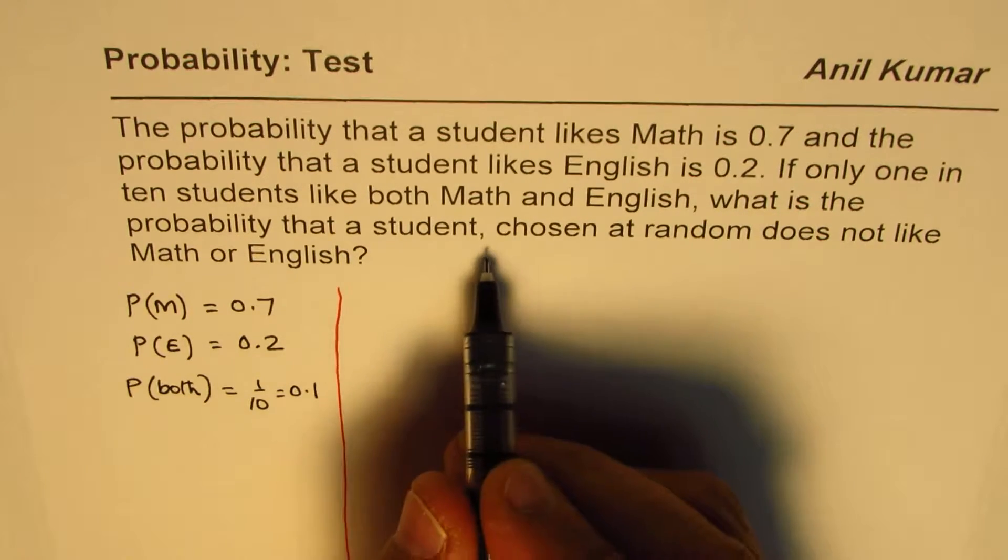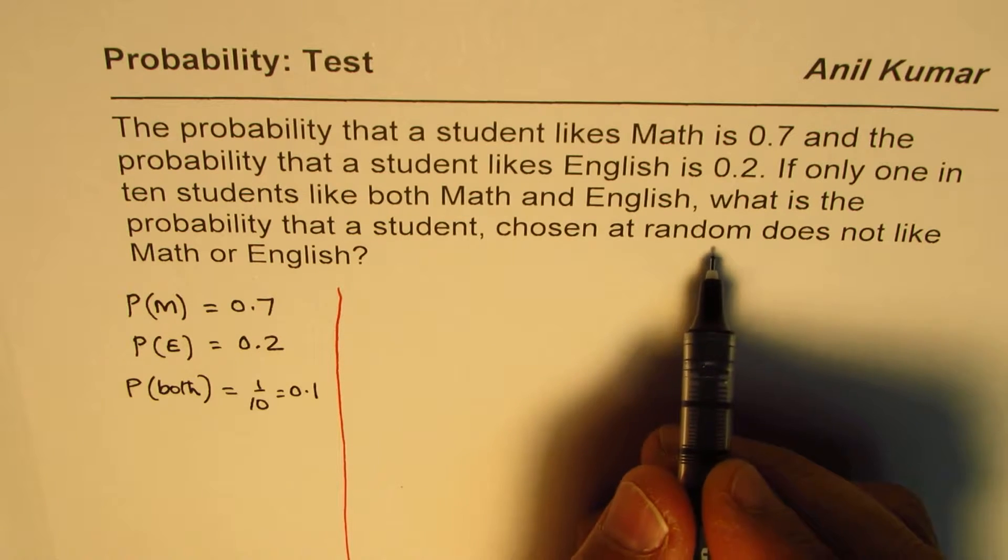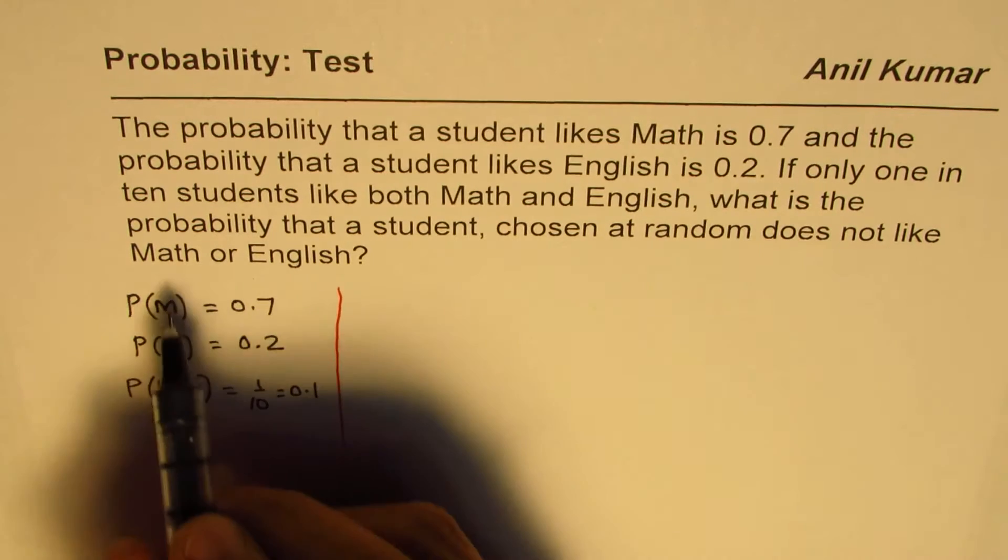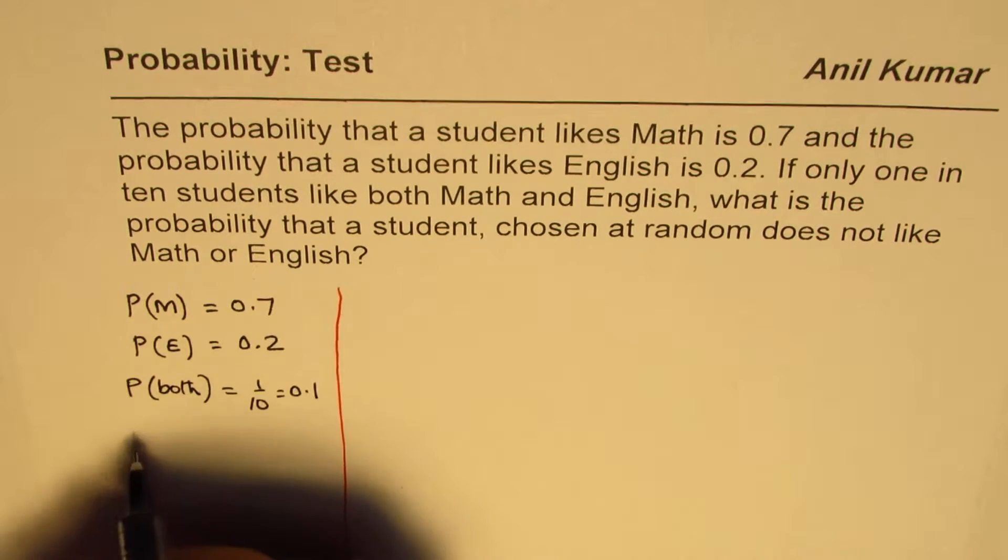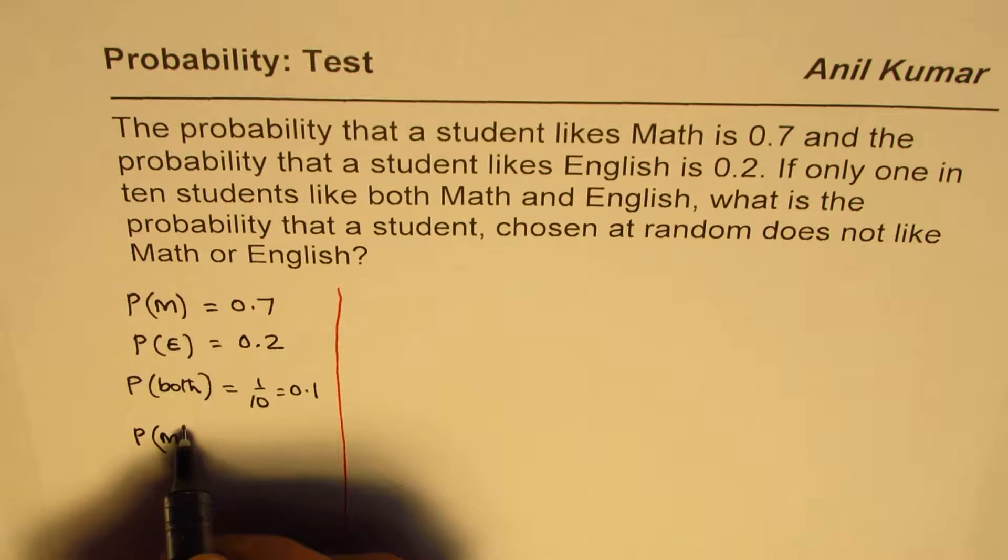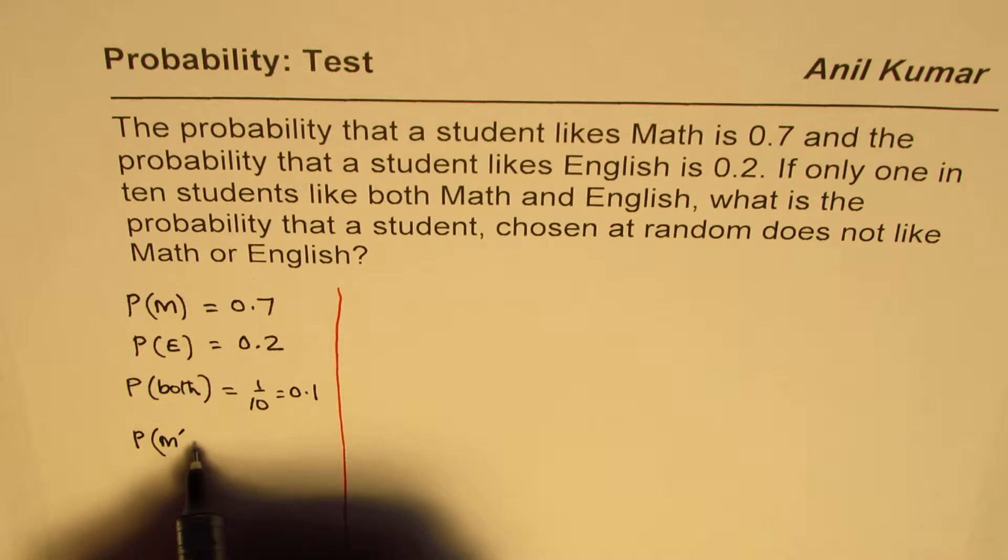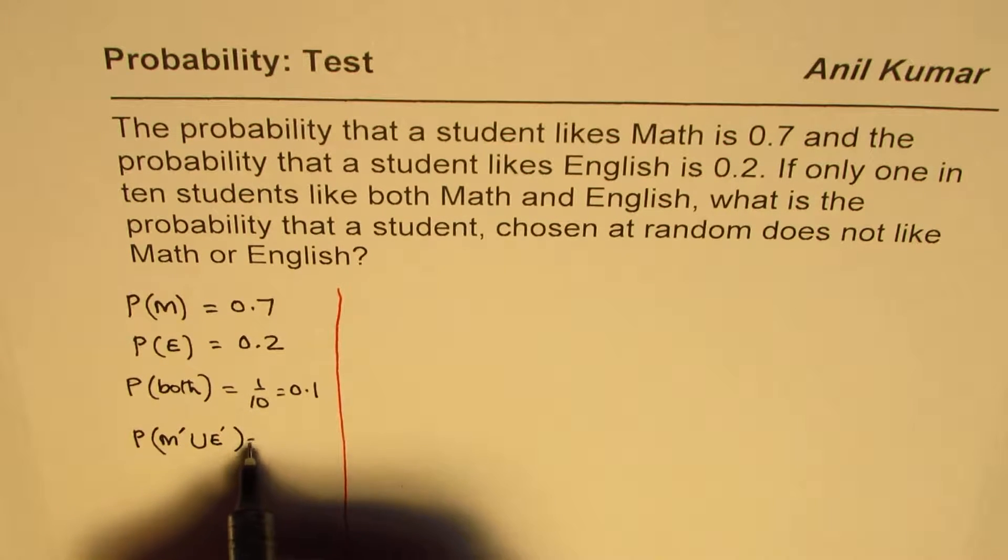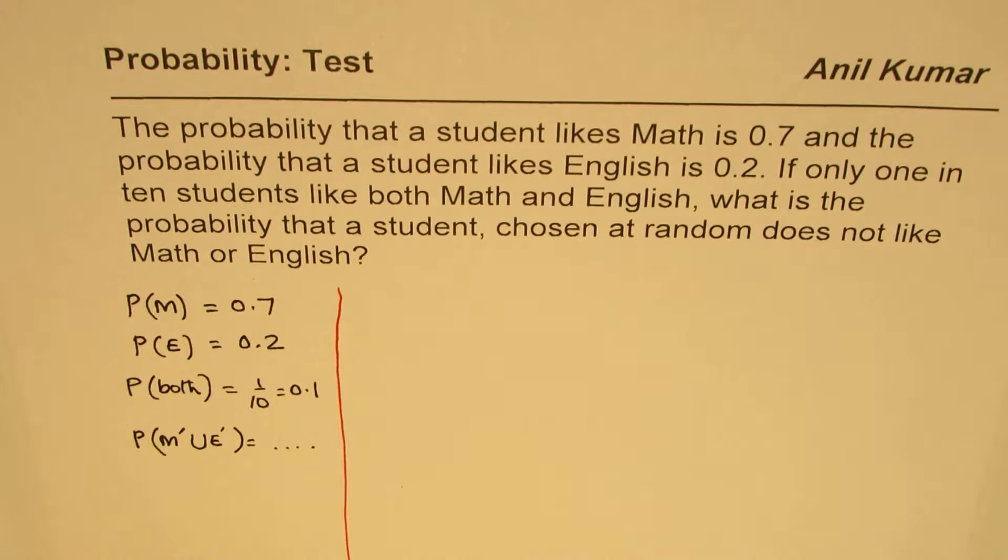What is the probability that a student chosen at random does not like math or English? That means does not like M prime union English, right? This is what we need to find, that's the question. I hope the things are very clear, you can pause and still answer the question.